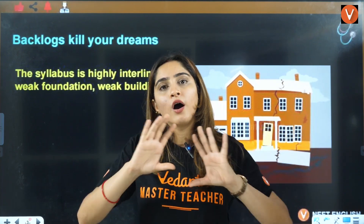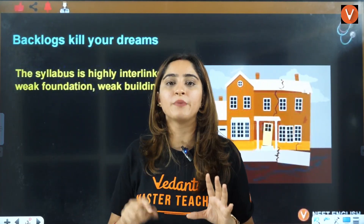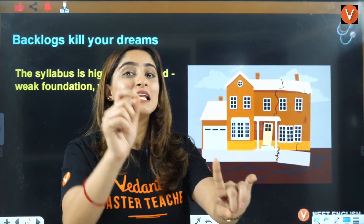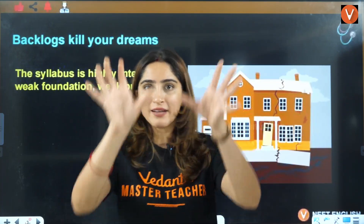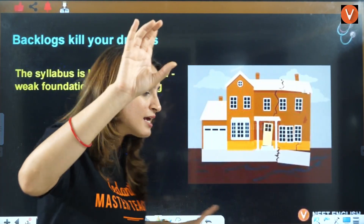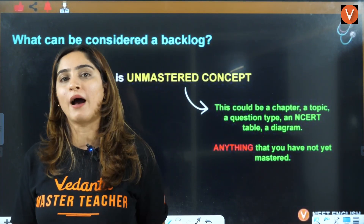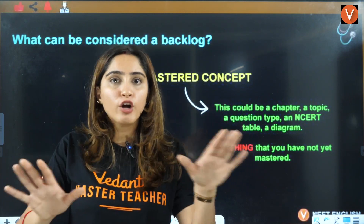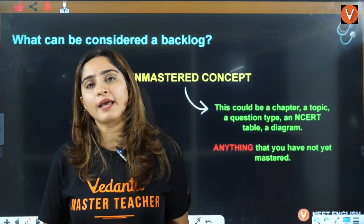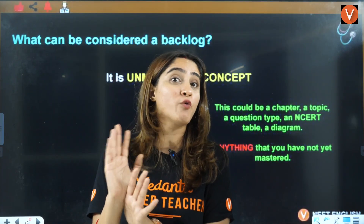Now that you've resumed, you should have written the basic chapters for chemistry, physics, and bio. Before noting your backlogs, understand what kind of backlog you have. If you don't have mastery on any concept, that is your backlog. Mastery means: if that question comes in the exam and you're sure you won't be able to answer it, or you're even a little doubtful — that is your backlog.